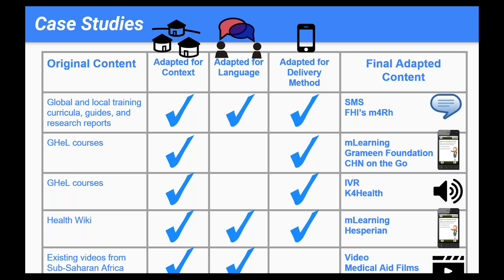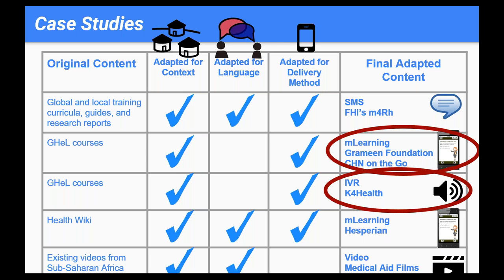In the guide, we highlight five different case studies that demonstrate combinations of adaptation: adapting for context, adapting for language, and adapting for delivery method. This table shows in what ways and from what original content the final product was adapted. On the left-hand side, you'll see the format of the original content, from global and local curricula guides to GHEL courses, health wikis, and video content. In the middle three columns, you'll see how the content was adapted. And on the far right, you'll see what the final product was — mLearning, SMS, and video.